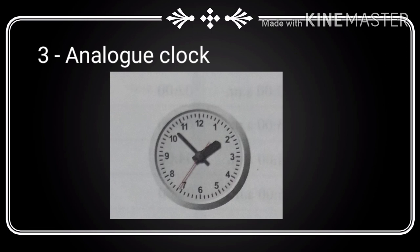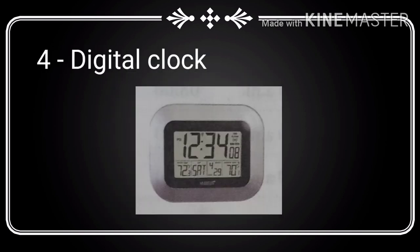Analog clocks have a circular dial with a circular scale of 12 hours. Digital clocks directly display the time.